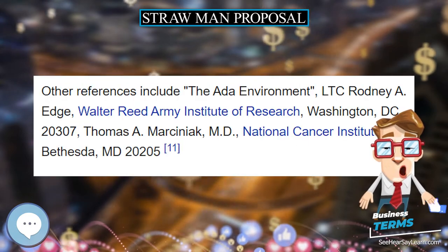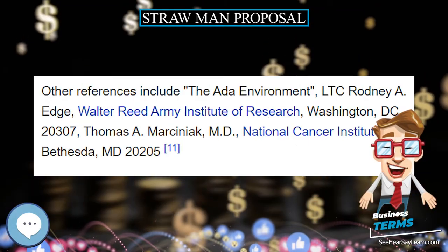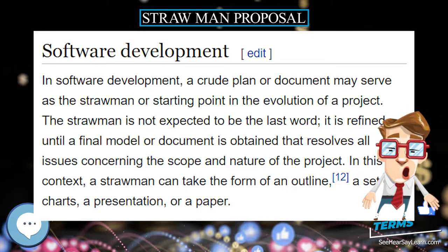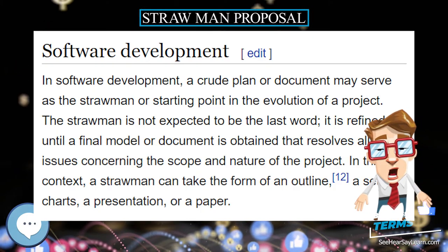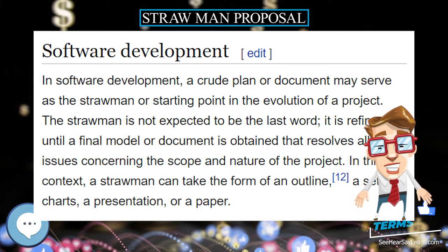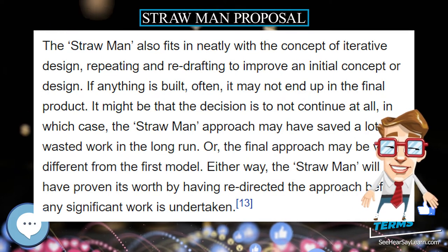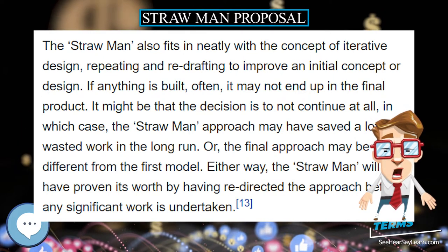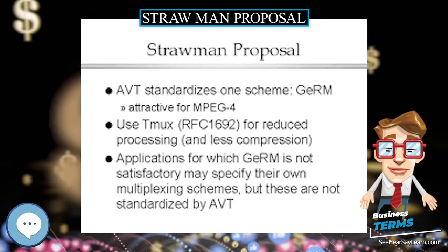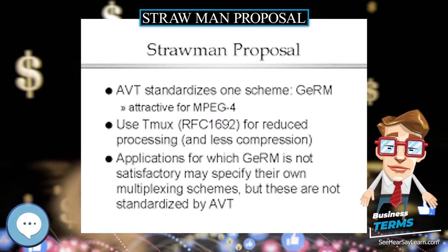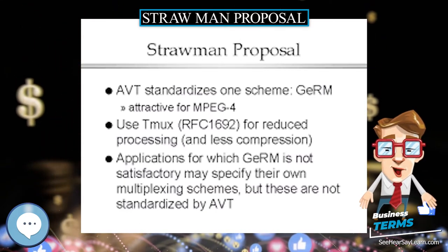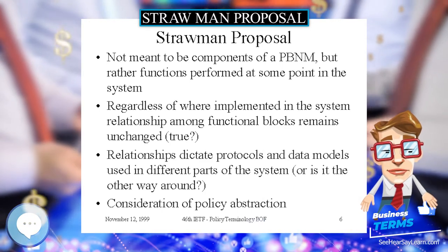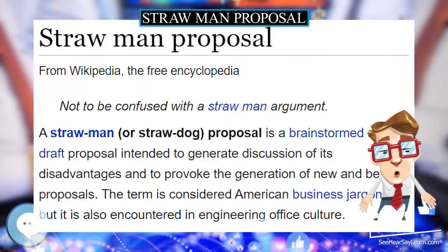Often, a strawman document will be prepared by one or two people prior to kicking off a larger project. In this way, the team can jumpstart their discussions with a document that is likely to contain many, but not all, of the key aspects to be discussed. As the document is revised, it may be given other edition names such as the more solid-sounding Stoneman, Iron Man, and so on.